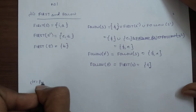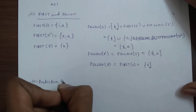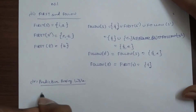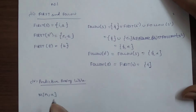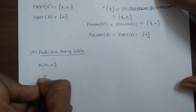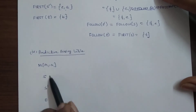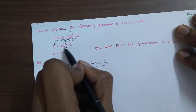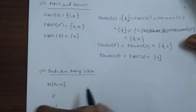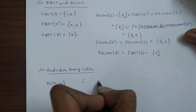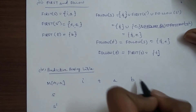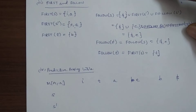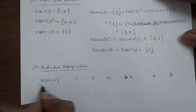Fourth step: constructive predictive parsing table M[A, a] — entries for all non-terminals. The non-terminals written are S, S', and E. The terminal columns include small 'a', small 't', small 'a', small 'b', epsilon, and small letter. We add dollar ($) to the table columns.